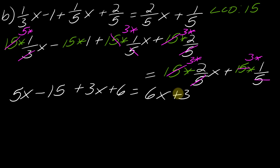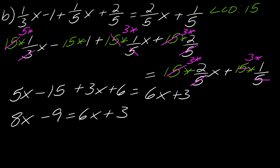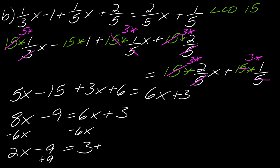So the problem I'm left with is 5x minus 15 plus 3x plus 6 equals 6x plus 3. Collecting like terms on the left: 5x plus 3x is 8x, and negative 15 plus 6 is negative 9, so 8x minus 9 equals 6x plus 3. I subtract 6x to get 2x minus 9 equals 3, then add 9 to each side so 2x equals 12, then divide both sides by 2 to get x equals 6.